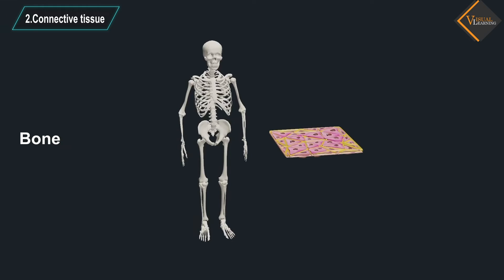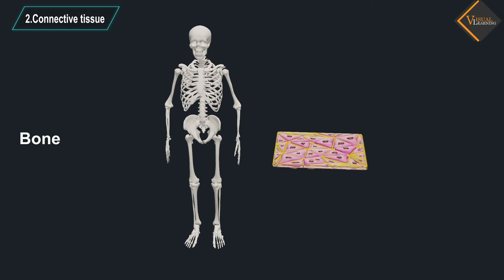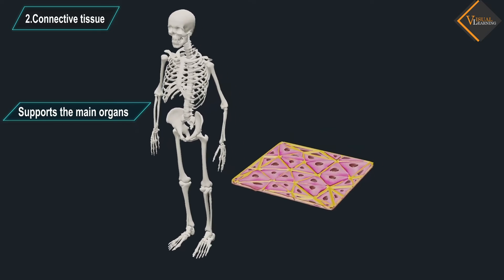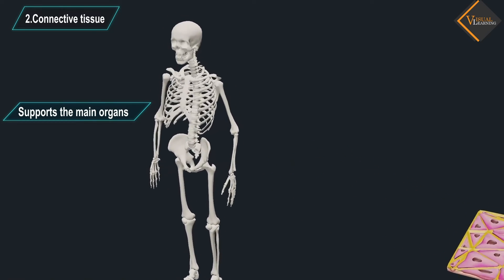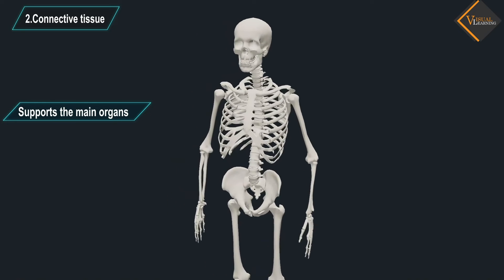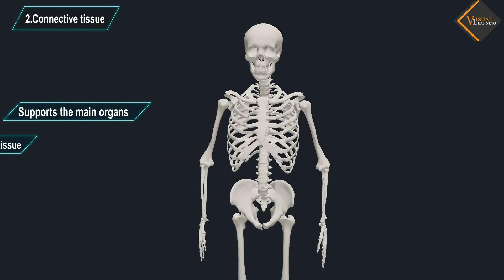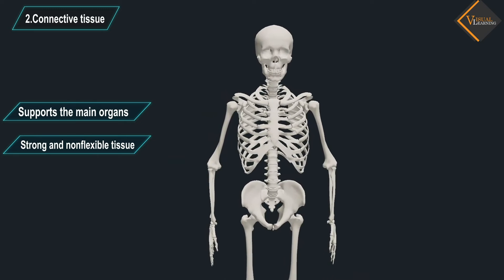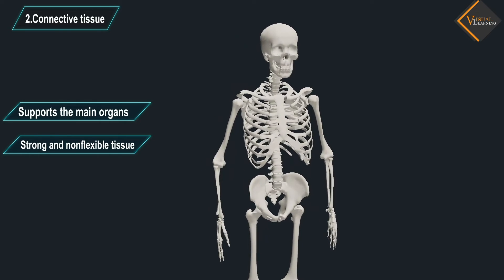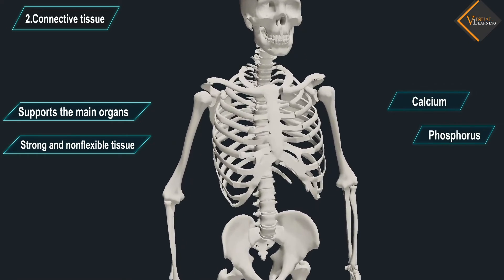Bone is another example of a connective tissue. It forms the framework that supports the body. It also anchors the muscles and supports the main organs of the body. It is a strong and non-flexible tissue. Bone cells are embedded in a hard matrix that is composed of calcium and phosphorus compounds.